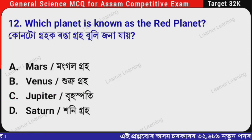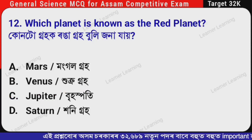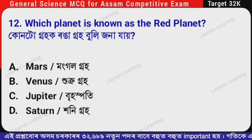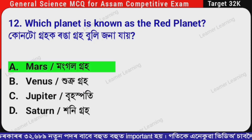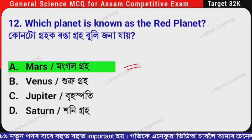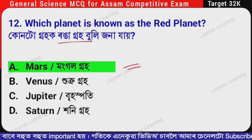Next question: Which planet is known as the red planet? (Assamese: Konto groh ranga groh buli jana jay?) The correct option is Option A — Mars. Mars is known as the red planet.